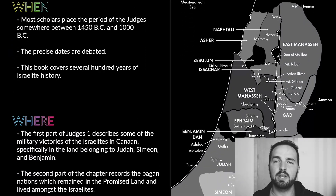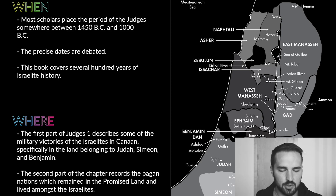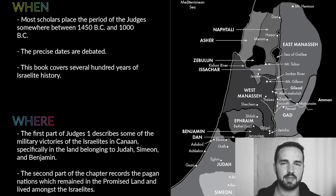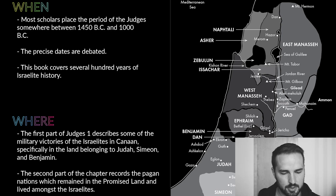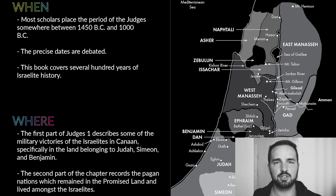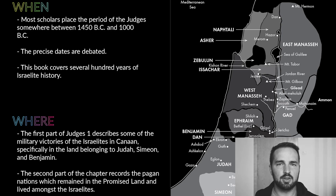When did these events take place? Most scholars place the period of the Judges between the years 1450 BC and 1000 BC. There's some debate as to the exact date — some people shifting it 50 years this way or that — but almost all scholars agree it falls somewhere between 1450 and 1000 BC. The way you date the Judges really depends on how you date the Exodus or how long it took the Israelites to conquer the land of Canaan, so there are complexities and you'll see a bunch of dates out there if you go looking.